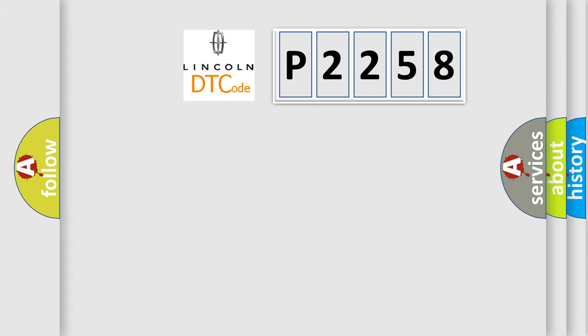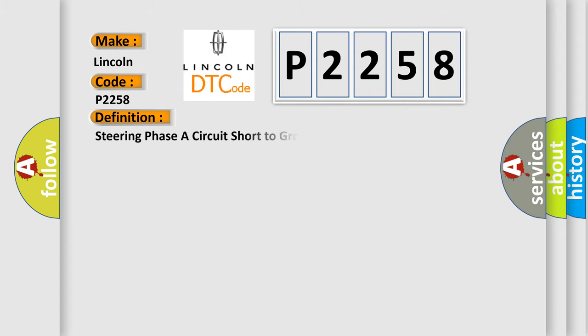What does the diagnostic trouble code P2258 interpret specifically for Lincoln car manufacturers? The basic definition is: Steering phase A circuit short to ground.